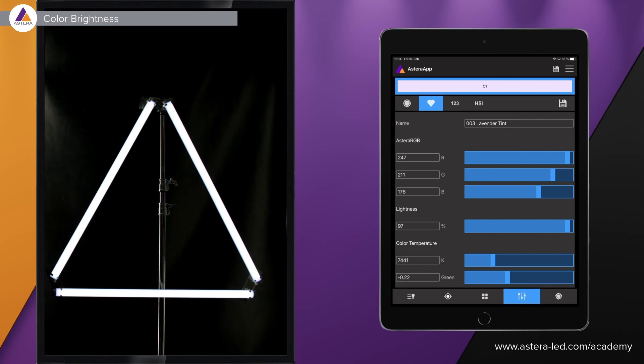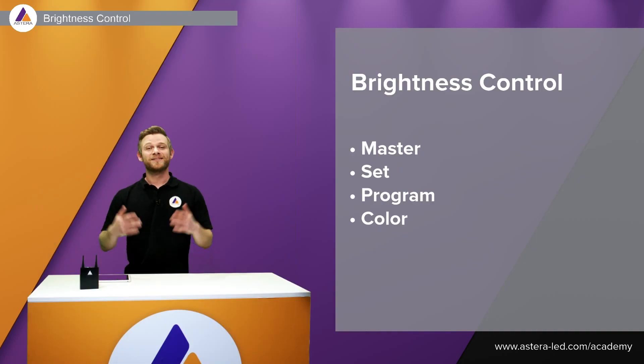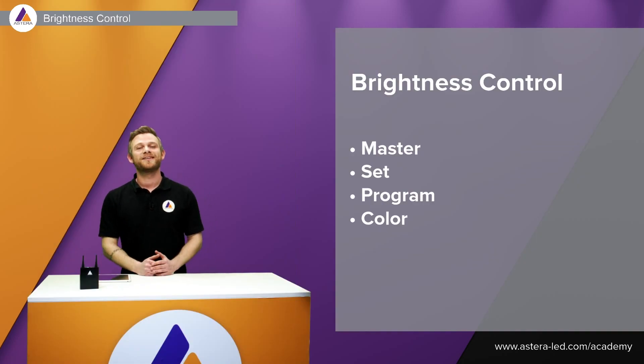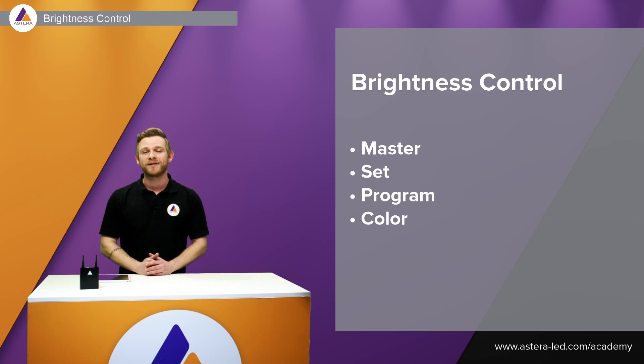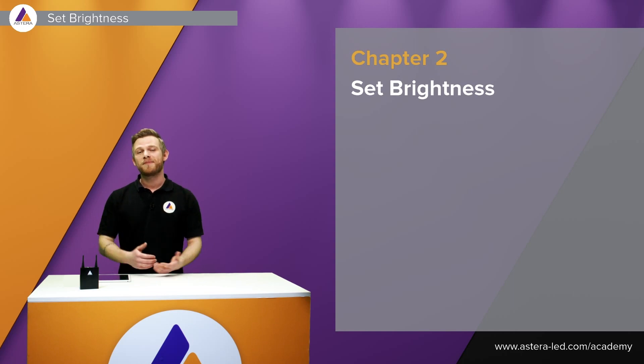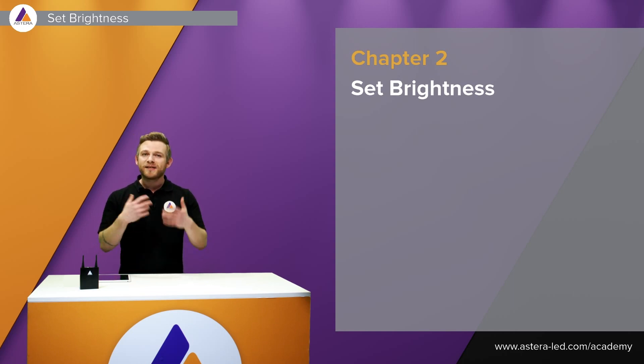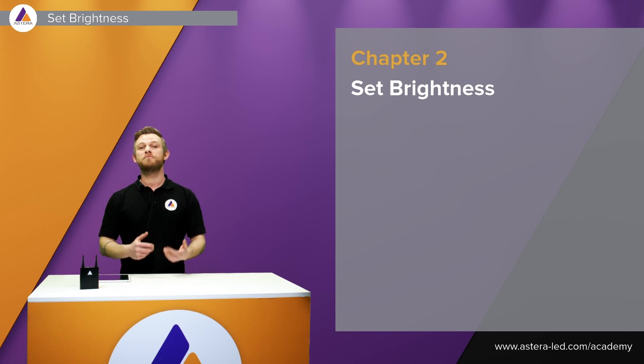You'll see the lightness control — you can adjust and dim down your color as you wish. Color brightness can be set within custom colors or directly in the HSI editor. The reason this exists is that if you do a fade between two colors and one appears brighter to the camera, you can quickly dim down the brighter one to make them look even to the camera.